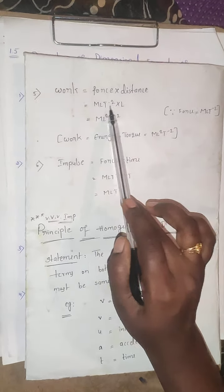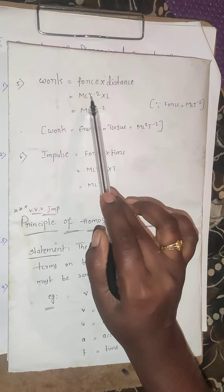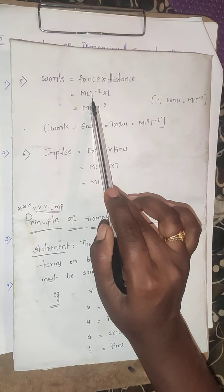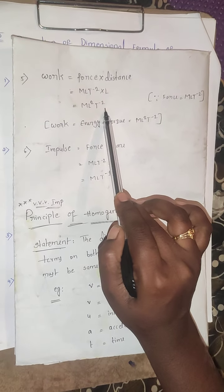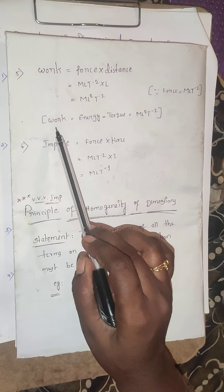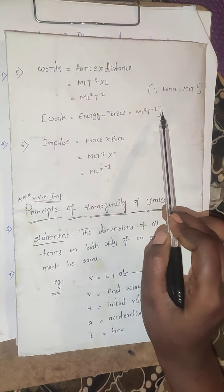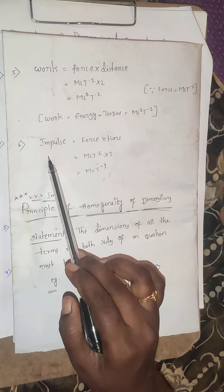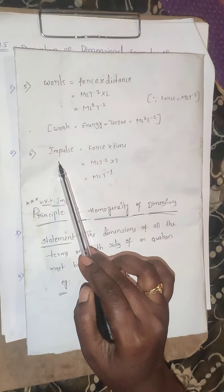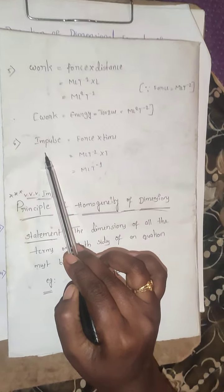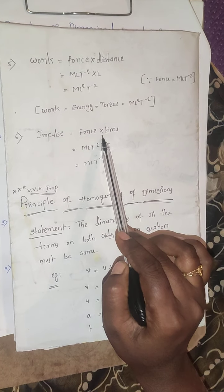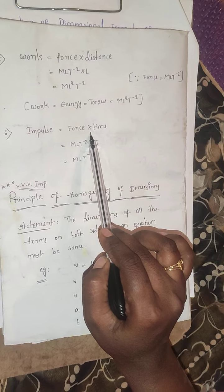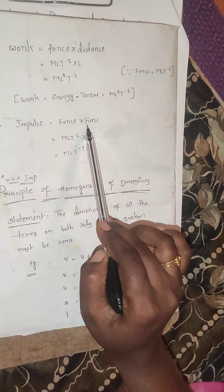What is the general formula of velocity? Velocity equals displacement by time. Displacement is represented by capital L. In dimensions, it is capital L divided by time, represented by capital T. So that gives us L into T to the power of minus 1. The general dimensional formula must include M, L, T.